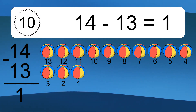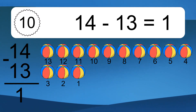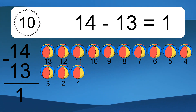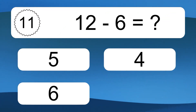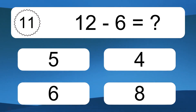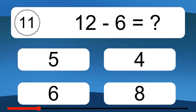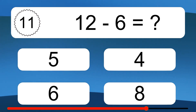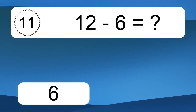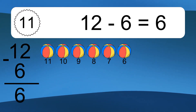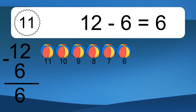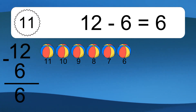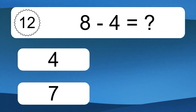Fourteen minus thirteen equals what? One. Let's count it: thirteen, twelve, eleven, ten, nine, eight, seven, six, five, four, three, two, one. Twelve minus six equals six.